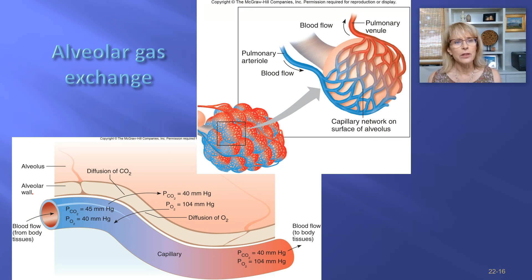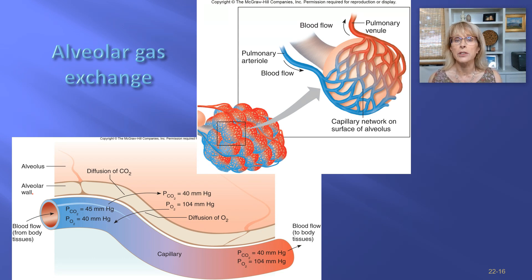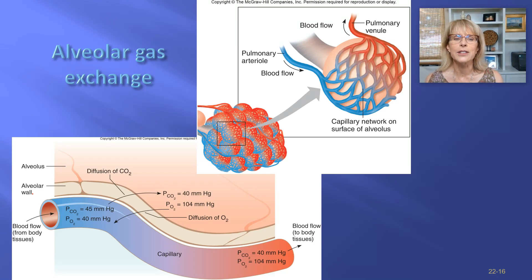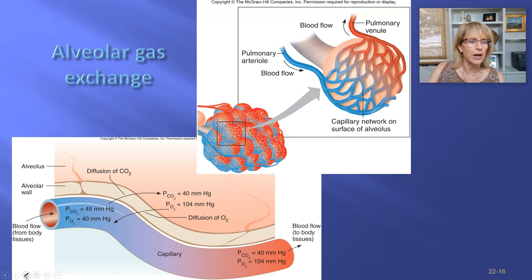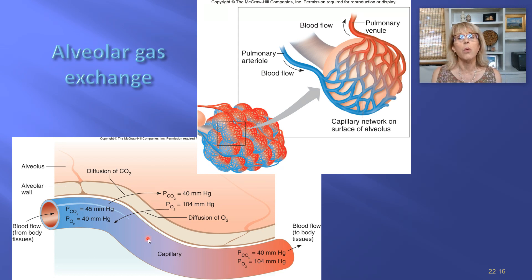So we're back to talking about alveolar gas exchange. As we're talking about alveolar gas exchange, the structure of an alveolus is made out of simple squamous epithelium. The reason that's a good idea is that simple squamous epithelium allows for diffusion, keeping this area very thin so that there's just the tiniest distance between the air and the blood going by.